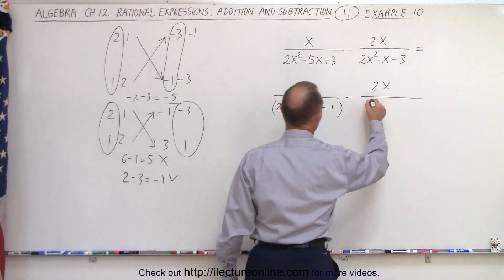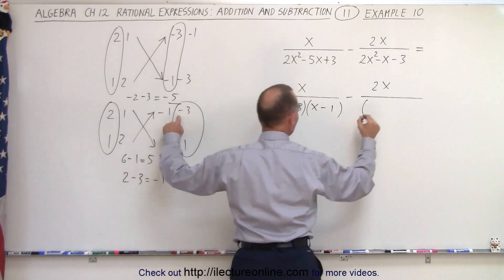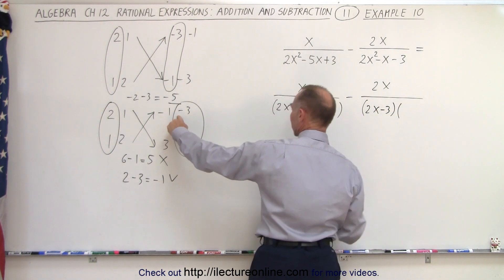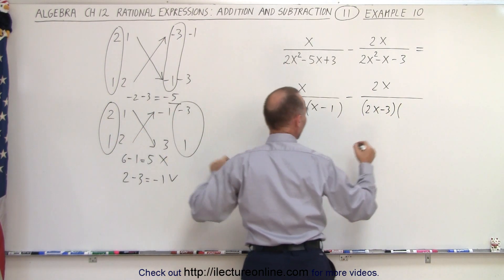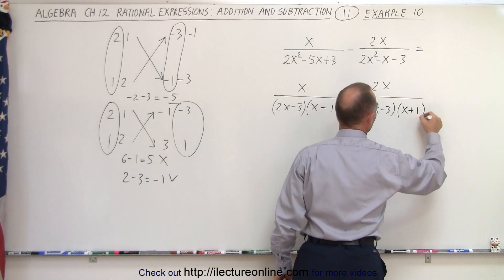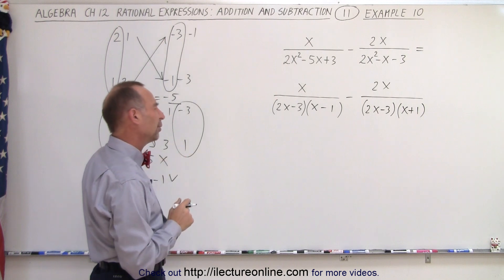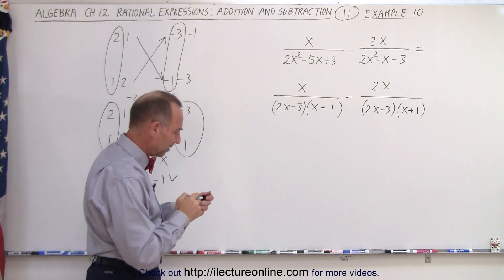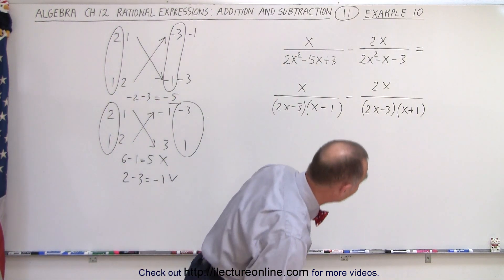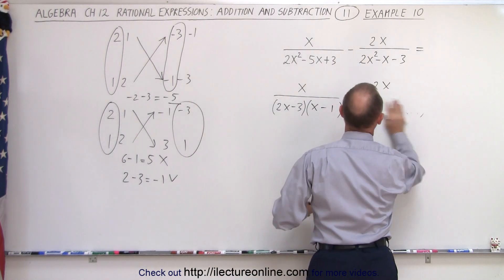Plugging that in, in the denominator we get 2x minus 3 and you multiply that times x plus 1. Now we're ready to find the common denominators. Notice again, I did not leave enough space and I'm going to have to multiply some things together. So I need a little bit more space.